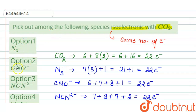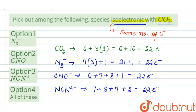So among these species, all are isoelectronic with CO₂, since CO₂ has 22 electrons and all the other species — N₃⁻, CNO⁻, and NCN²⁻ — also have 22 electrons. Therefore, the correct option is option 4.